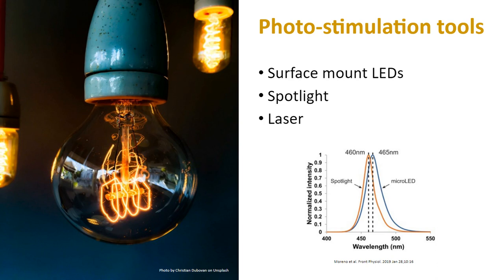Now we move to photo-stimulation. There are three main tools: surface mount LEDs (micro-LEDs), spotlight LEDs for wide-area stimulation, and lasers. Depending on your experiment type — tissue/organ level or single cell — you'll choose accordingly. For tissue or organ work, surface mount LEDs and spotlights are preferred; for single cells, a laser is ideal. Regardless of choice, make sure the wavelength is correct — around 460–465 nanometers to excite channelrhodopsin.